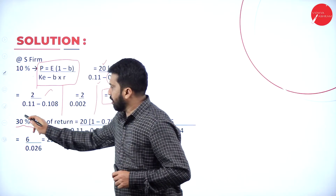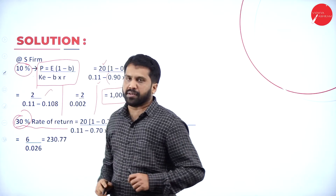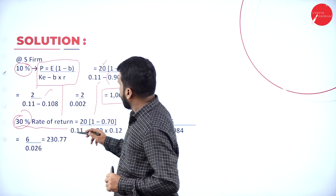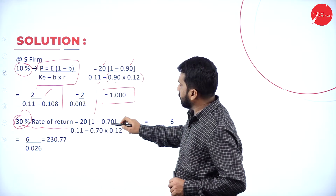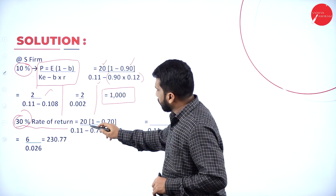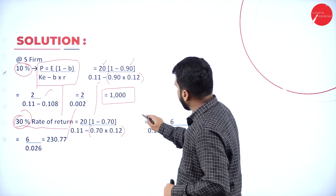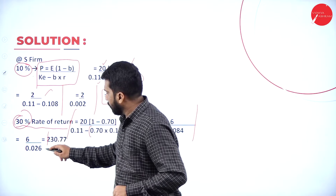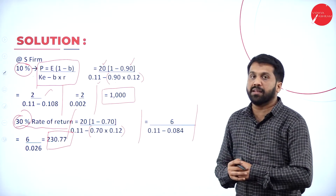Next we go for 30% payout. For 10% payout we have done. Next is 30%, then 50%. The formula remains the same, only your B changes from 0.90 to 0.70 — because 100 minus 30 is 70. So simplify this, and your final answer is 230.77.